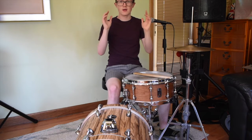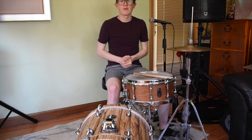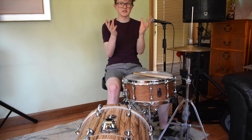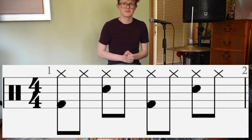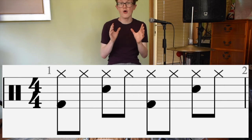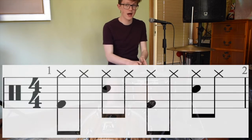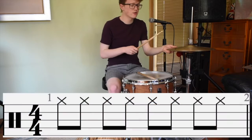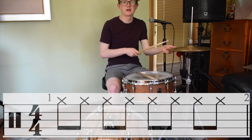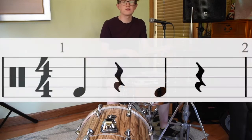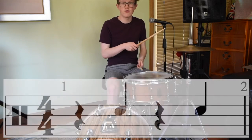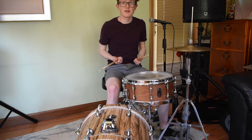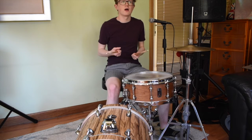Now we're going to take those three parts and put them all together into one piece of music. That's got all three parts working in tandem: hi-hat going on every eighth note, bass drum on beats one and three, snare drum on beats two and four. When we put them all together it sounds something like this: one two and three and four and. That's all there is to the basic rock beat.